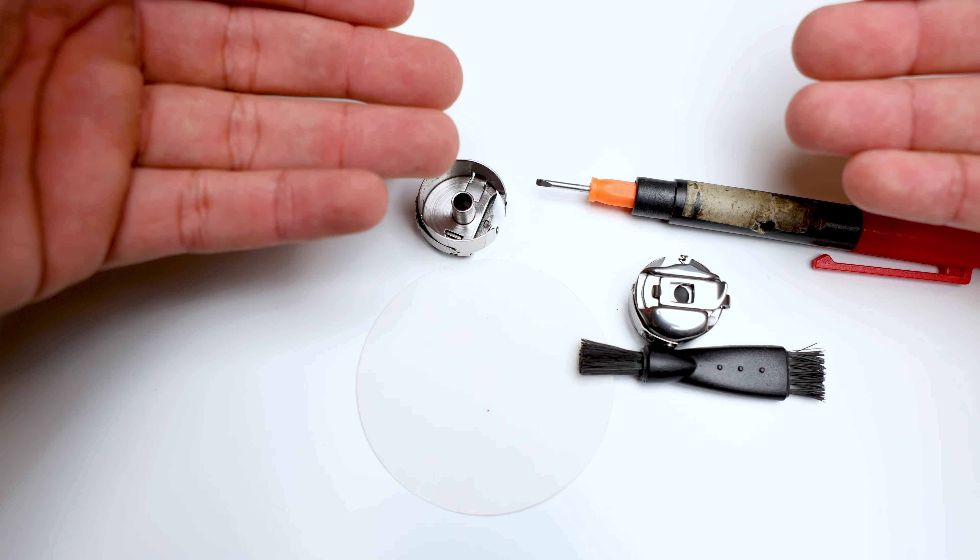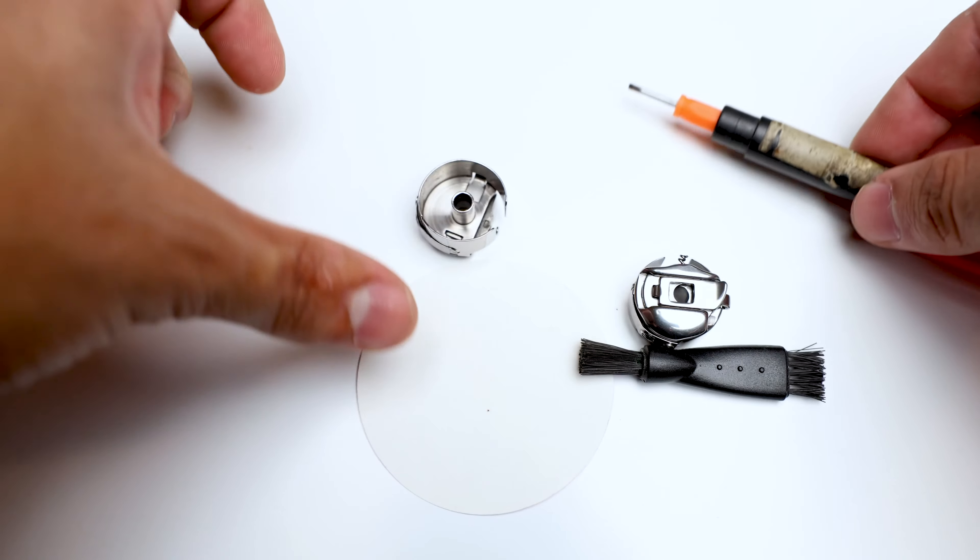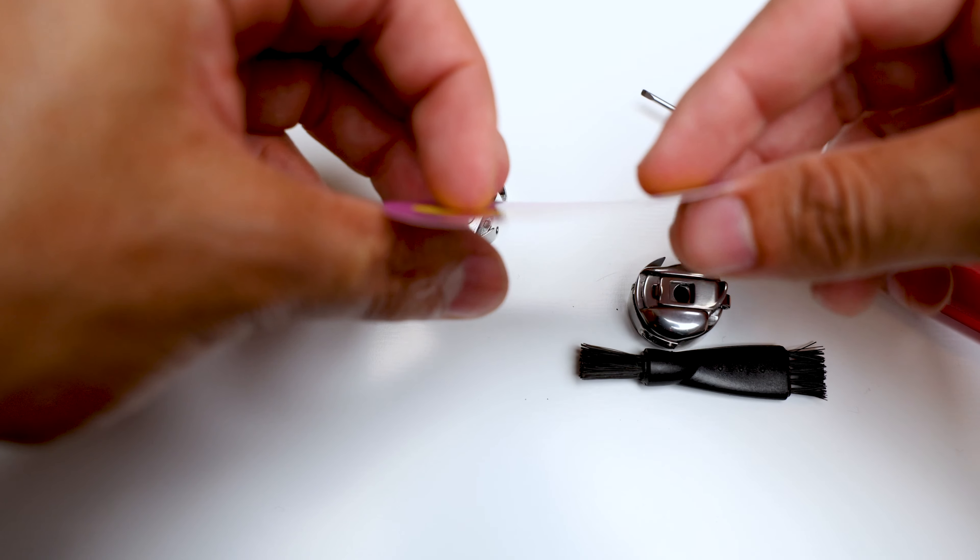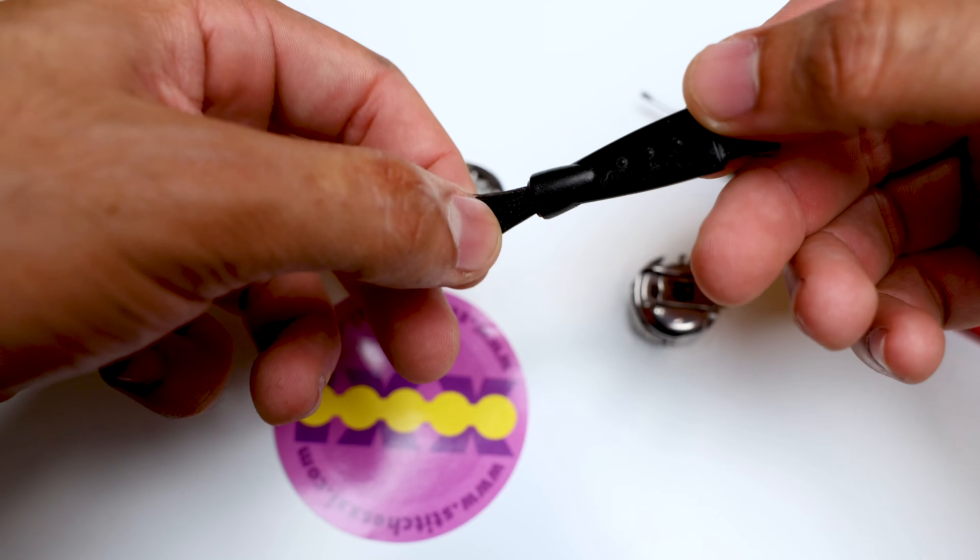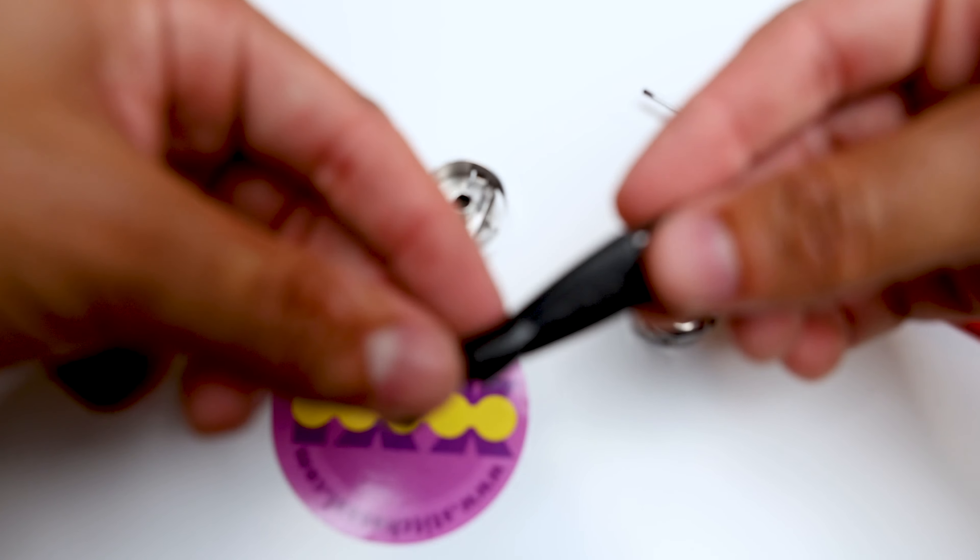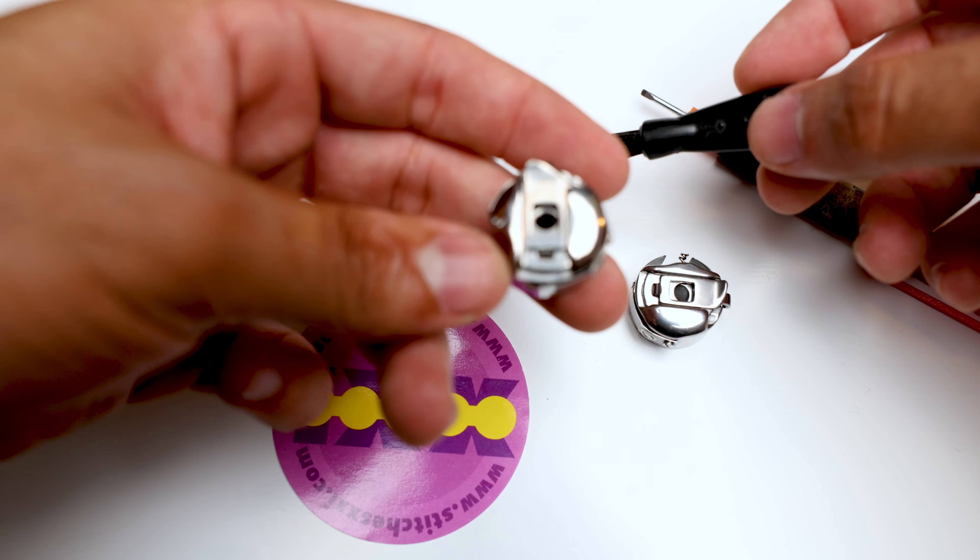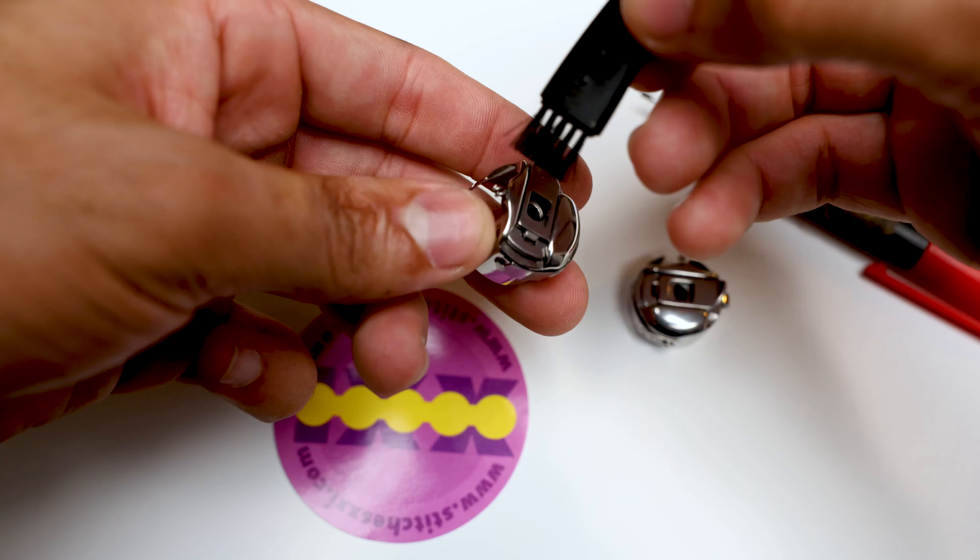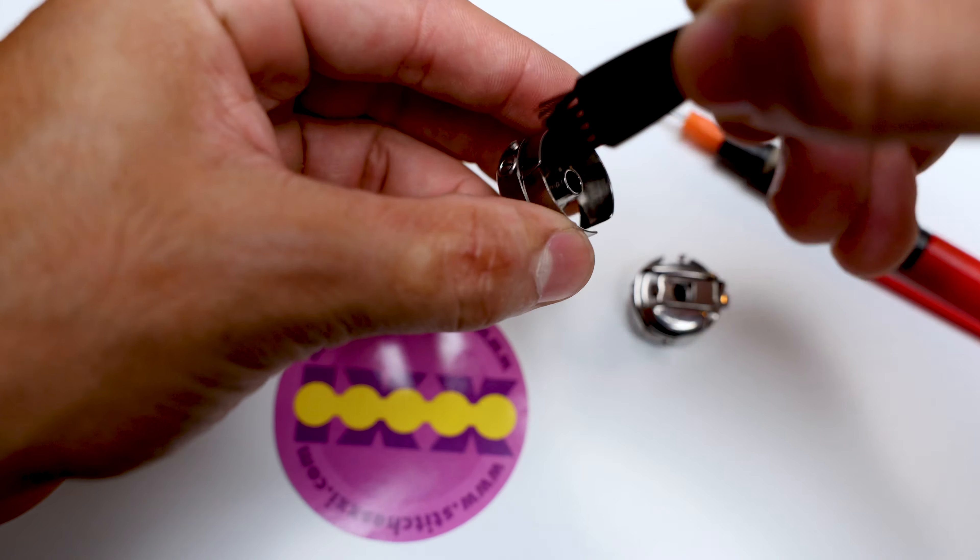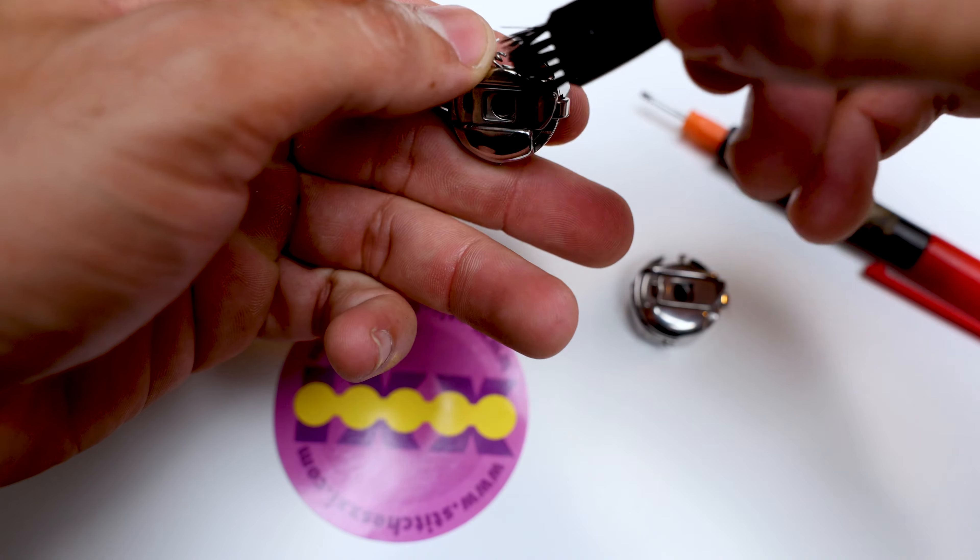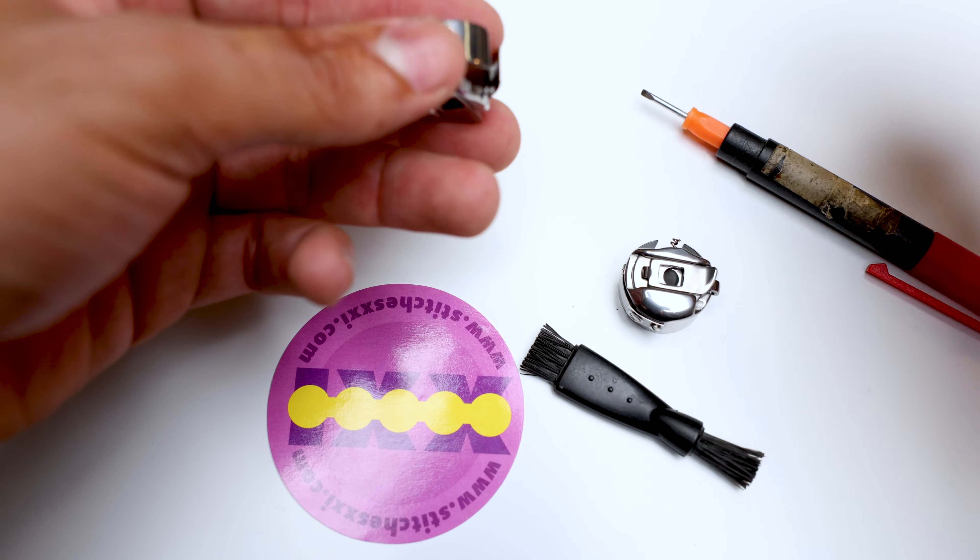All right. So these are the things that you will need to clean your bobbin case: a flat screwdriver, something that is thin like a business card. In this case, I have a sticker and a brush. This will do it. You can use compressed air if you want to do that. But for now, this is what we're going to use. So in here, I got my bobbin case and we're just going to brush it off like so. You can try to do it inside, but we're going to get deeper than this. This is your standard. This is what you should be doing, right? But now we're going to take it further.